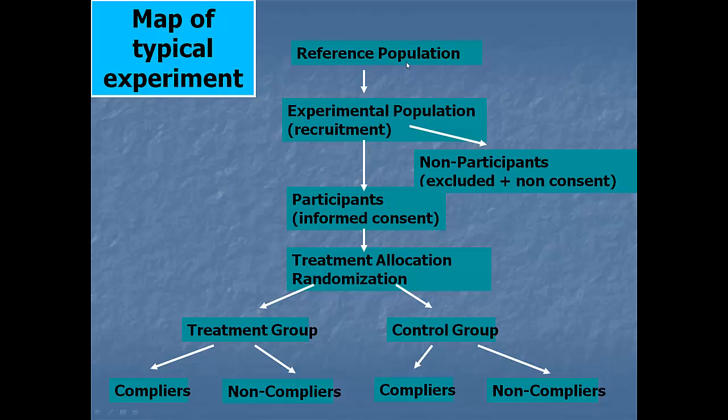So this is a little bit different map. Now this is reference population. So that's just another word for source or target population. So this is the experimental population or the sample. And this group, the non-participants are the ones that decided not to consent or were excluded.